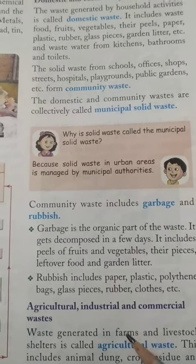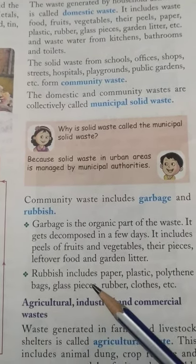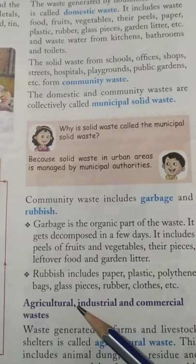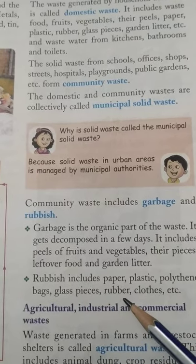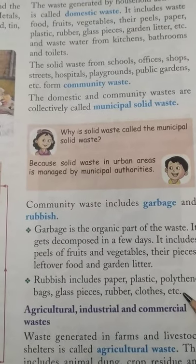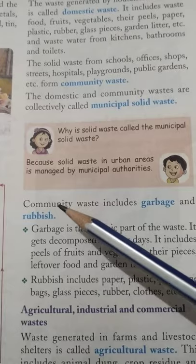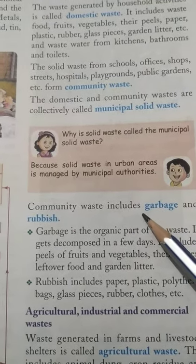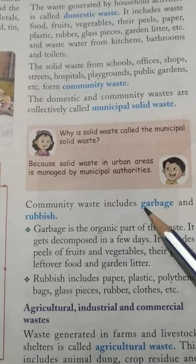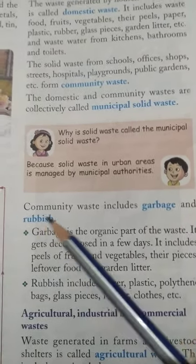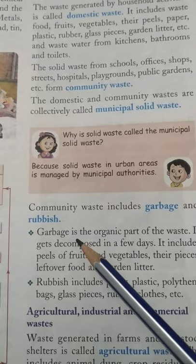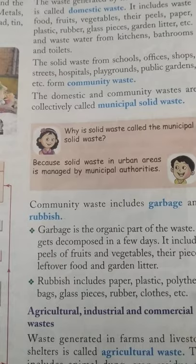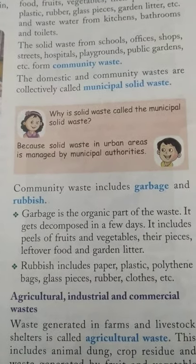Rubbish includes paper, plastic, polythene bags, glass pieces, rubber, clothes, etc. This community waste is divided into two parts — garbage, which is the organic waste, and rubbish, which includes paper, plastic, polythene bags, etc.